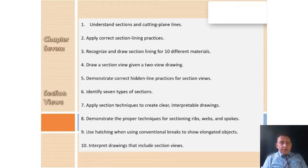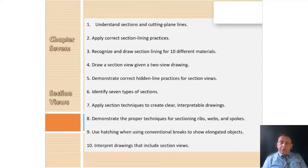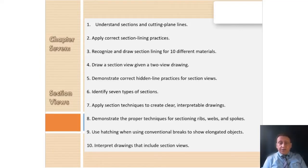The course objectives: understand sections and cutting plane line; apply correct section line practice; recognize and draw section lines for 10 different materials; draw section view from a given two-view drawing; demonstrate correct hidden line practice for section view; identify 7 types of section; apply section technique to create clear interpretable drawings; demonstrate proper technique for section ribs, webs, and spokes; use hatch when using conventional breaks and how to elongate objects; and interpret drawings that include section views.